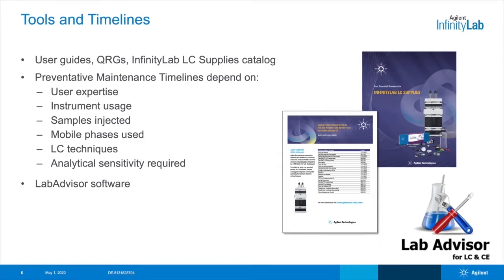We also get a lot of questions about PM or preventative maintenance timelines. For instance, what frequency should we replace a pump seal or a lamp? This is very difficult to answer, as we know our customers use our instruments at different frequencies and for different applications. PM timelines can depend on a lot of things, including how well the system is maintained and used relating to user expertise, how frequently the systems are used, the complexity of the samples injected, the mobile phases used, which could include buffer salts, as well as the LC techniques used, which might include normal phase solvents.